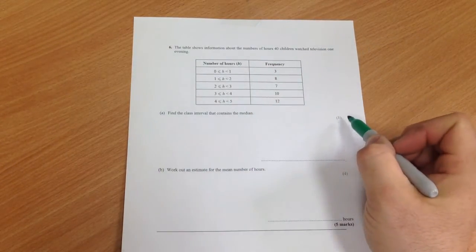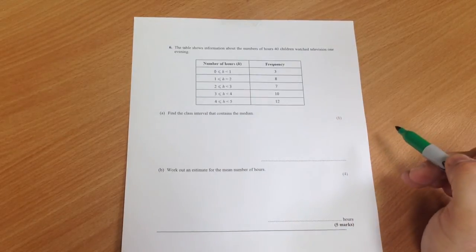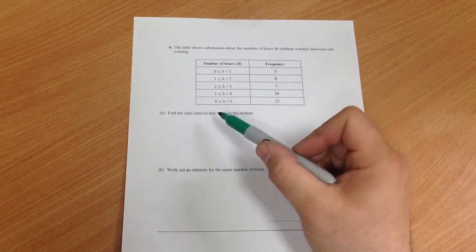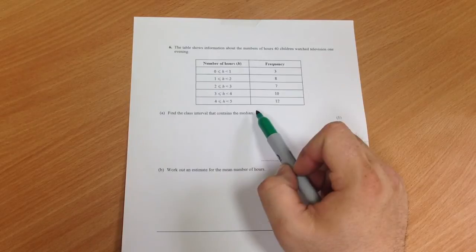There's usually another question that goes along with it. This one's talking about the median. So if there's 40 children, which class interval contains the median?